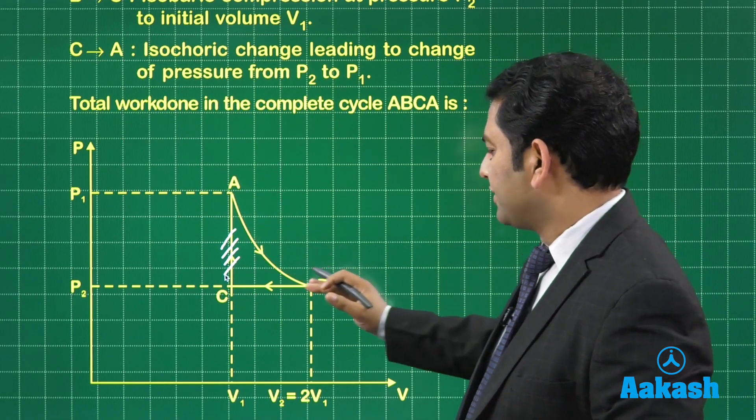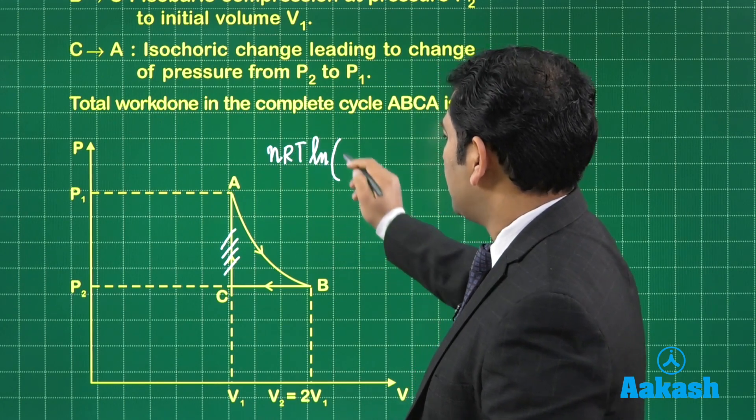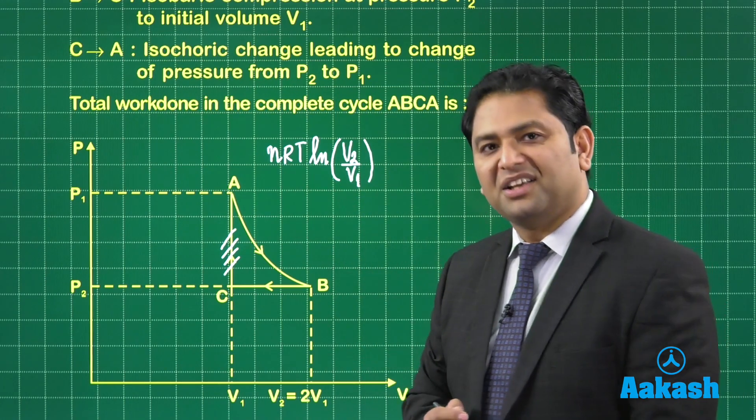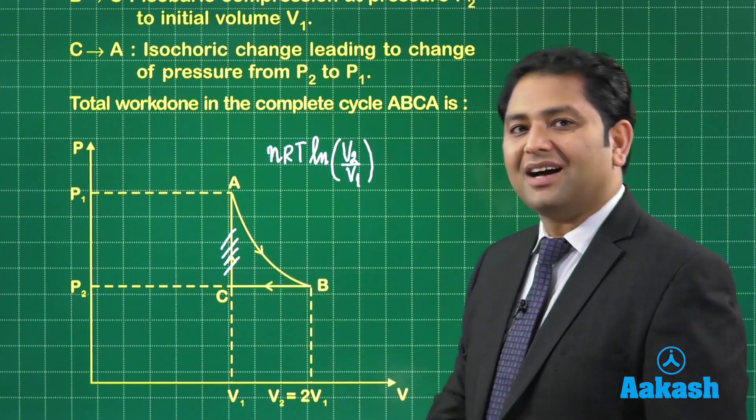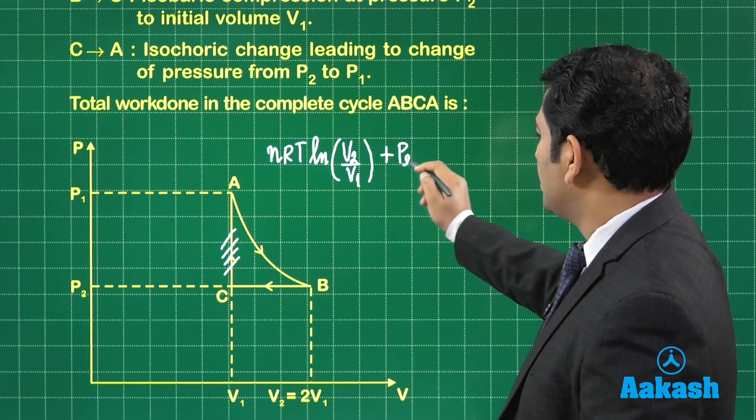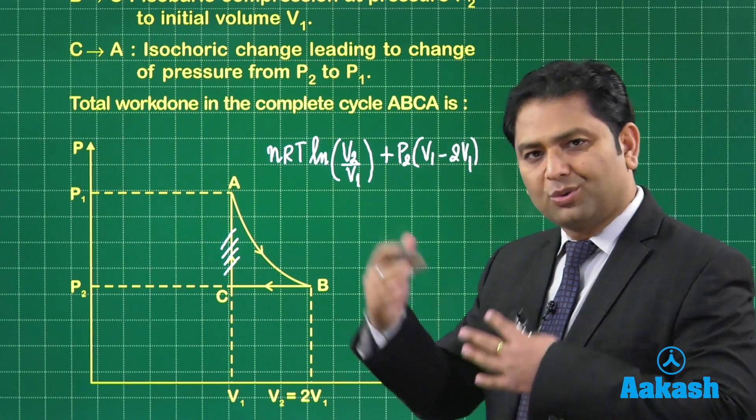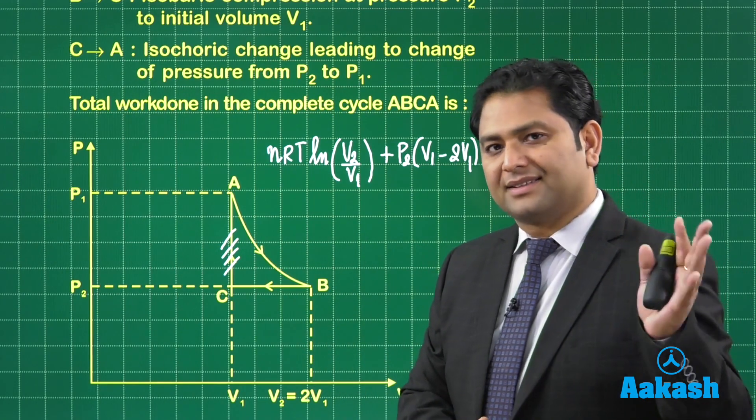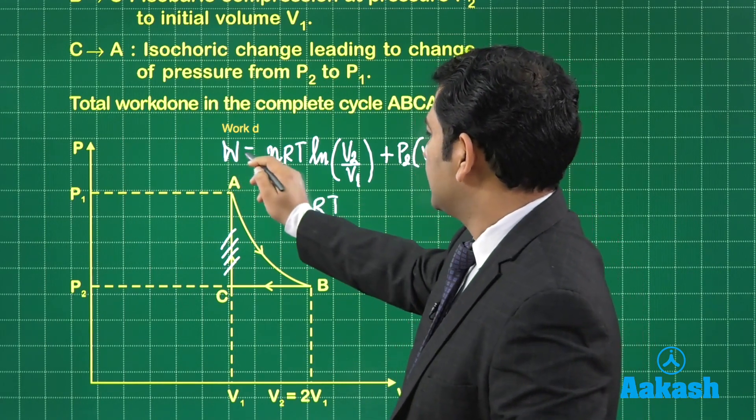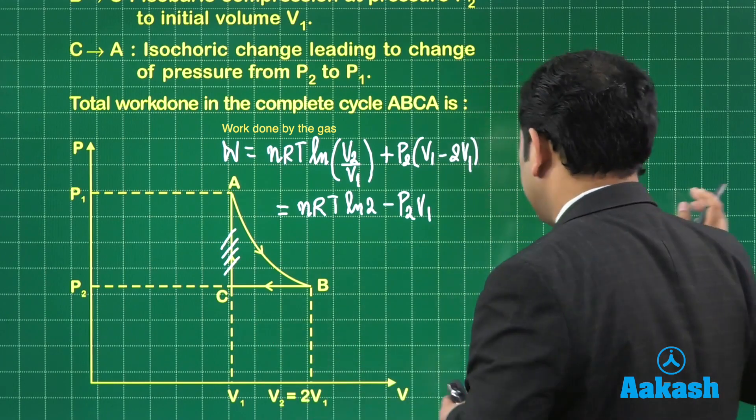This work is positive, this work is negative. The total work done is NRT natural log V2 by V1. That is the expression of work done in isothermal expansion. That's an isobaric process. If I calculate the work done, that is P2 times final volume minus initial volume, and there will be a negative sign. This is NRT natural log 2 minus P2 times V1.